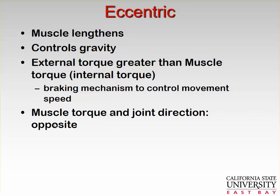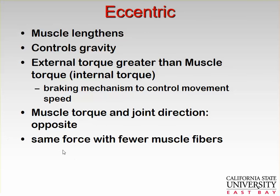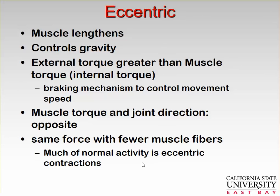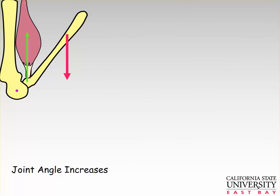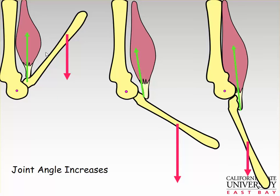As mentioned, muscle torque and joint direction are opposite during eccentric contractions. Eccentric contractions can generate the same force with fewer muscle fibers — they are very efficient, and most of our normal activity involves eccentric contractions. Muscle injury and soreness is typically related to this type of contraction. Here we see the biceps brachii creating a flexor torque while the joint goes into extension — internal torque opposite to joint motion — that is an eccentric contraction.